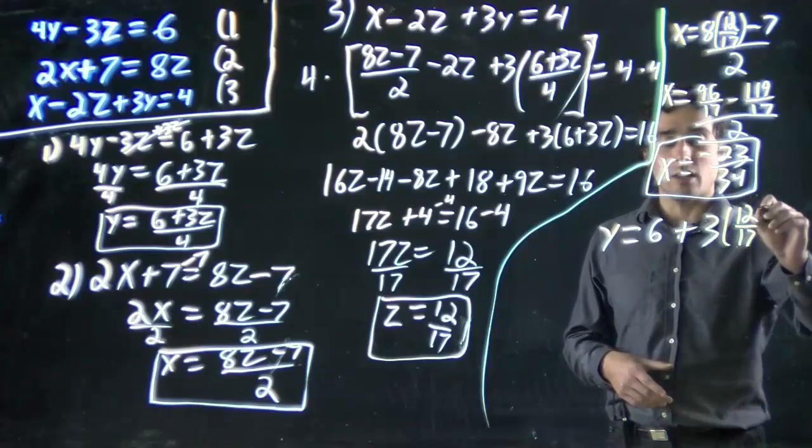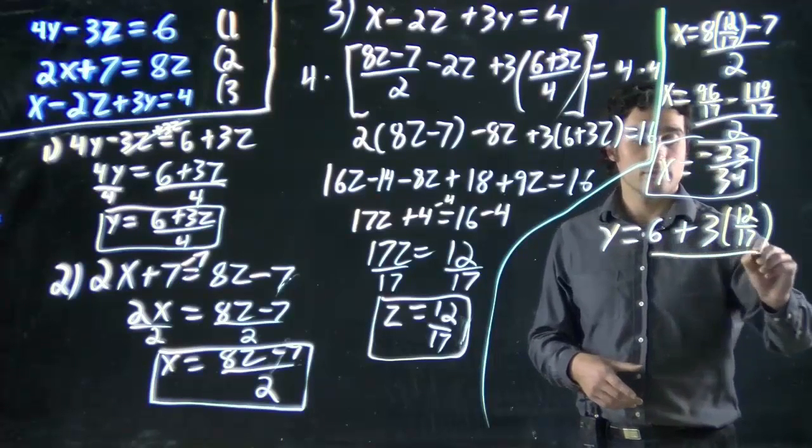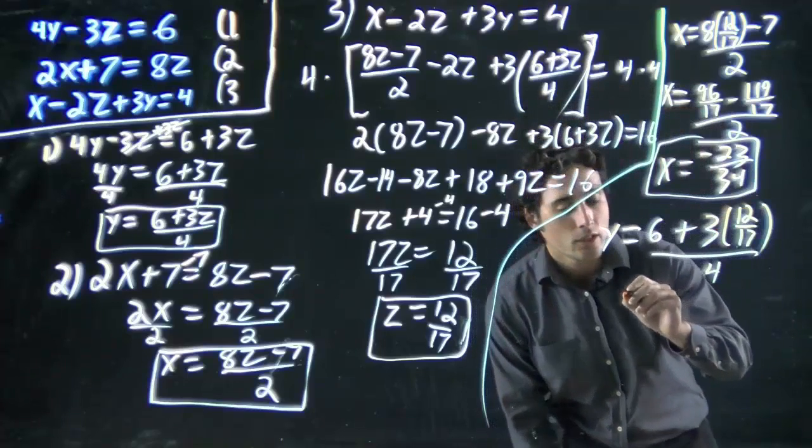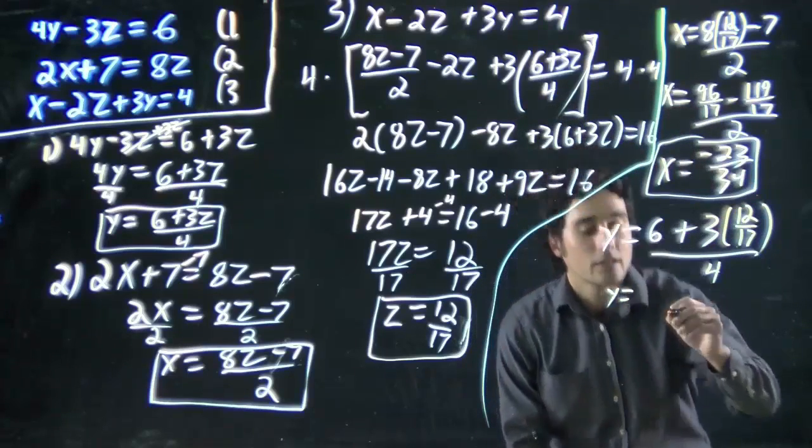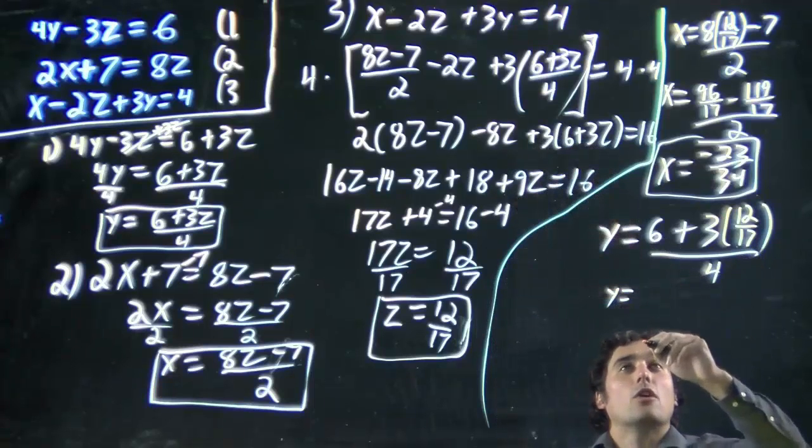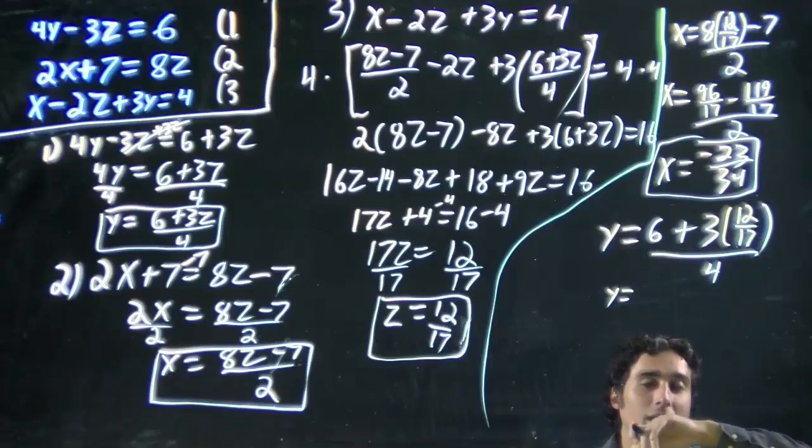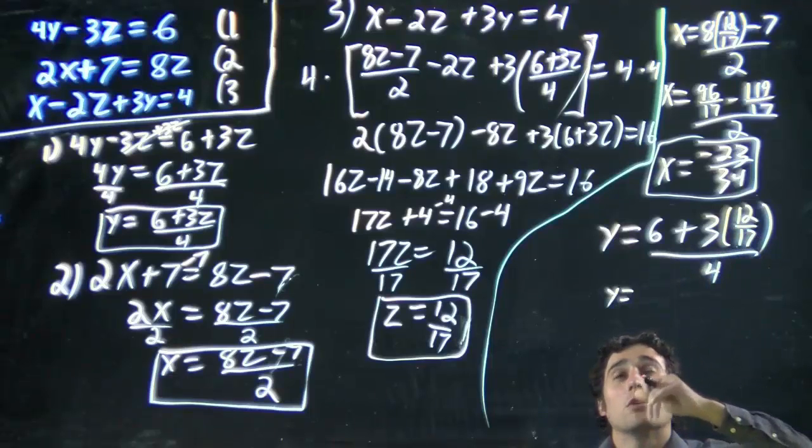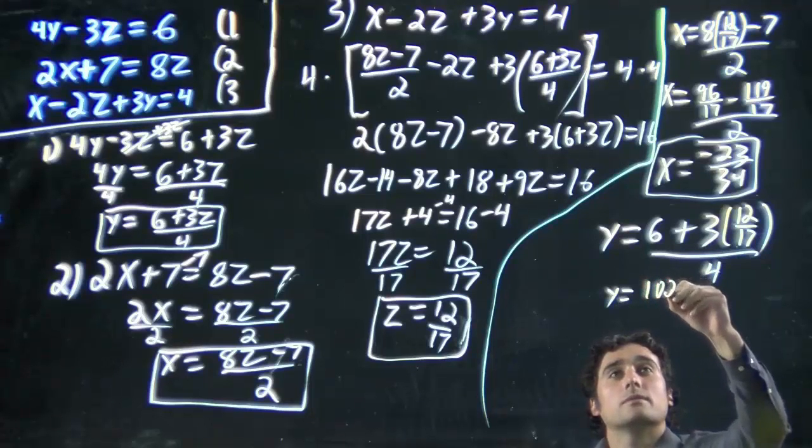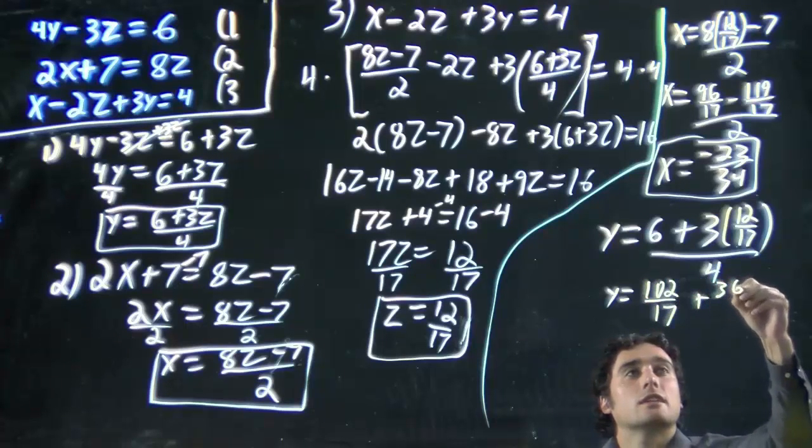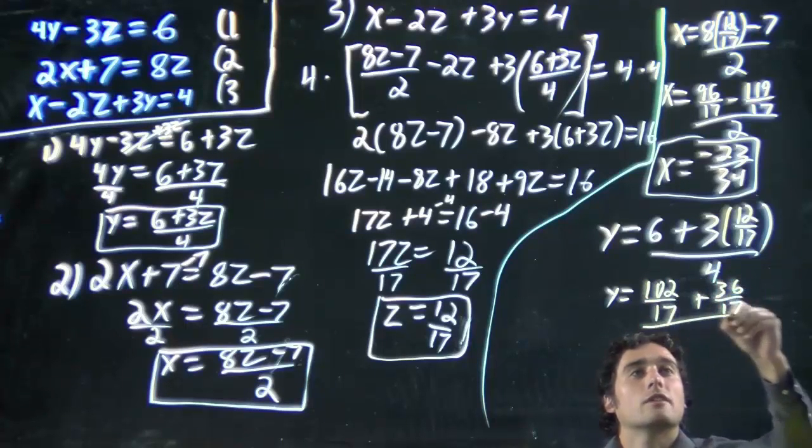We're placing z in this equation, and very similar to what we did up there, multiply it in. y equals, well, we know we want to be over 17. So we have to multiply 6 times 17, or 102 over 17, plus 36 over 17, all of this over 4.